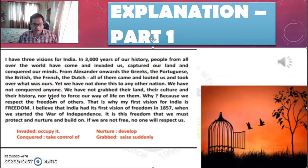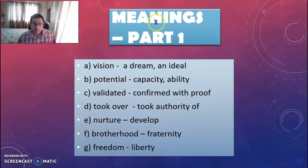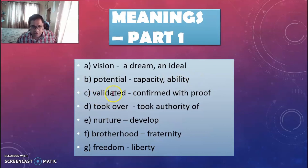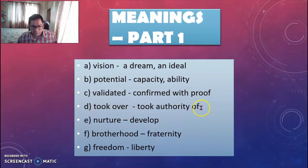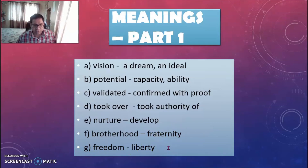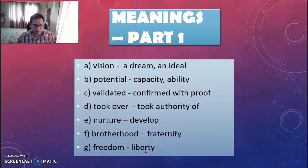Now let us read the meanings of the first part. Vision means a dream or an ideal. Potential means capacity or ability. Validated means confirmed or with proof. Took over means took authority of. Nurture means develop. Brotherhood means fraternity. And lastly, freedom means liberty. Read these meanings again and remember them. After this, there is a live game.